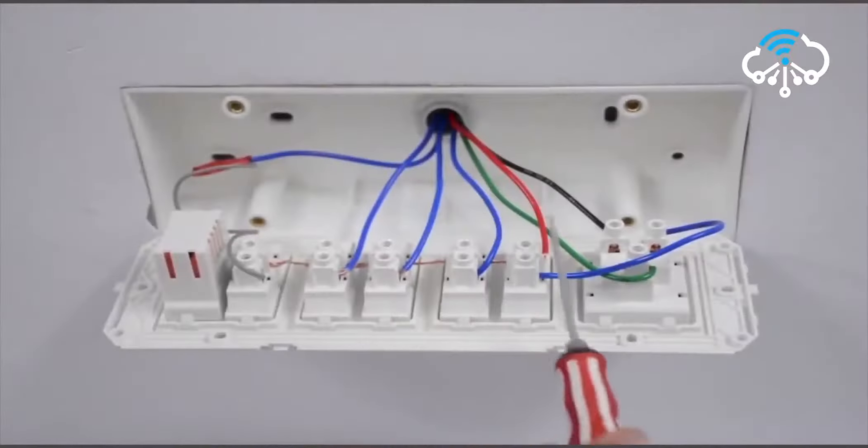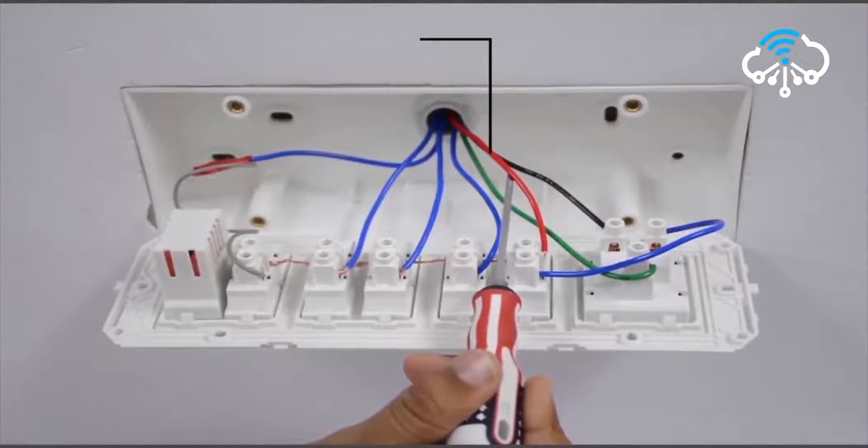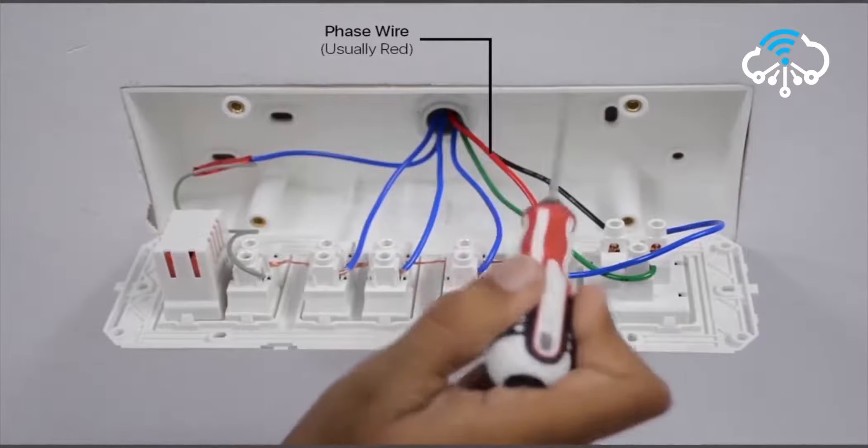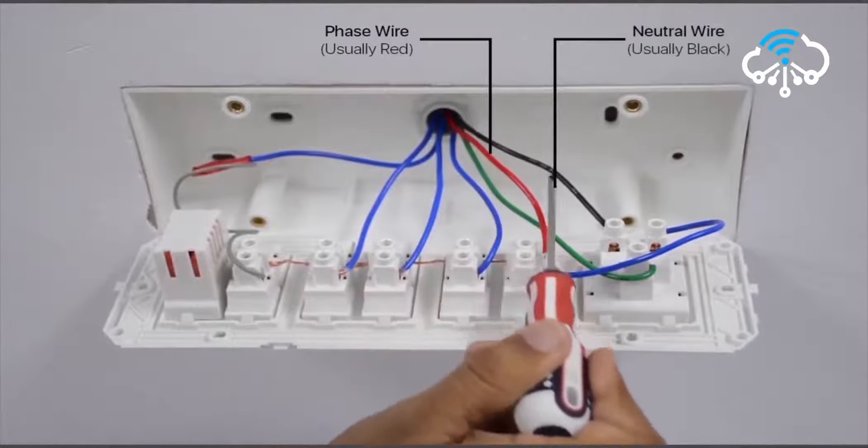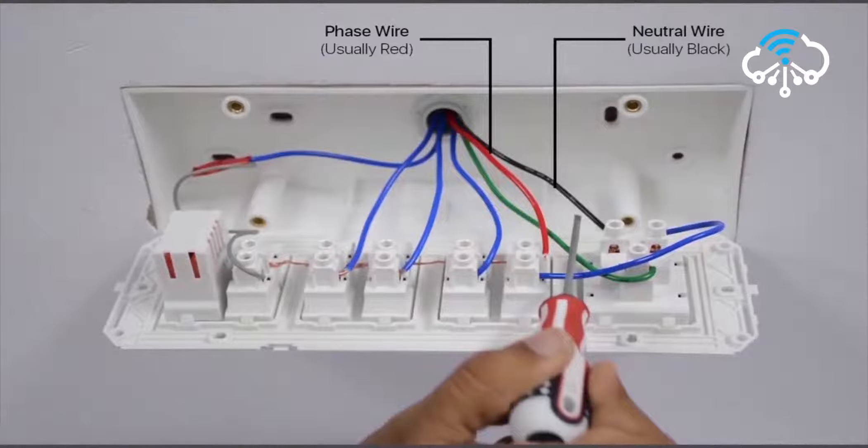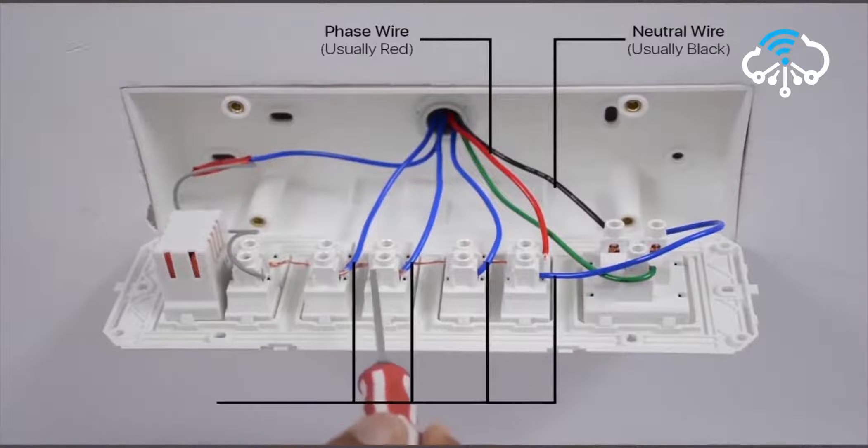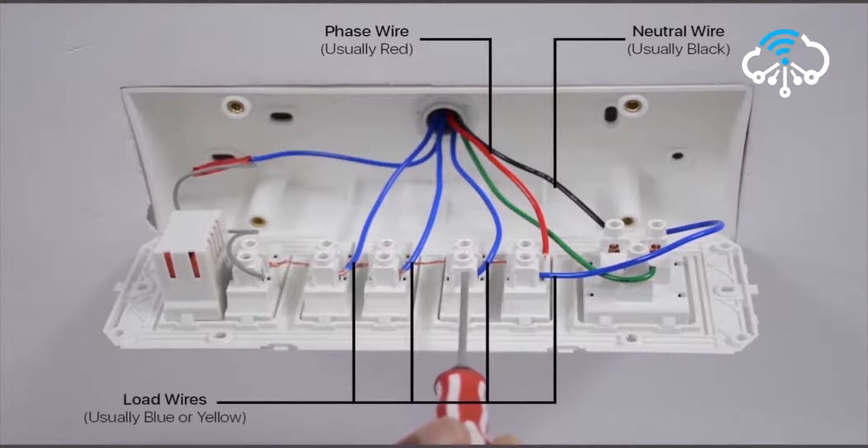Phase wire is the red wire. It is connected to all the appliance switches in the switchboard. The neutral wire is the black wire. It is almost always black in color and is either connected to a socket or is left free with an insulation taping inside the switchboard. Load wire is usually blue or yellow and has connections to different loads.